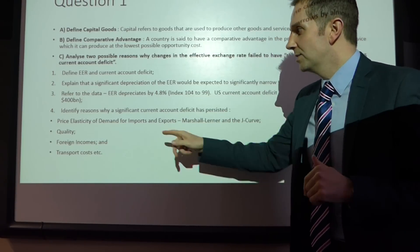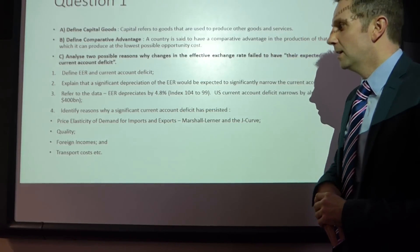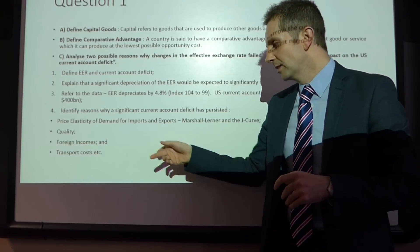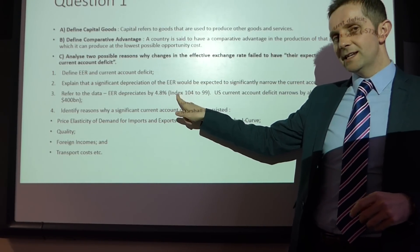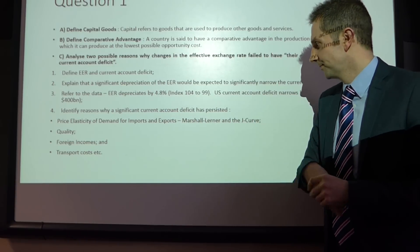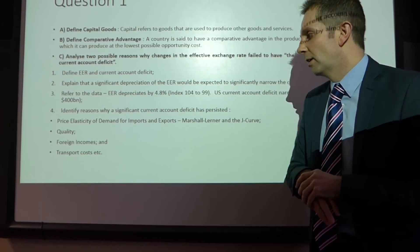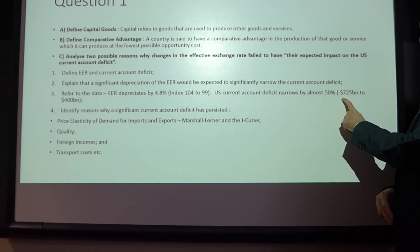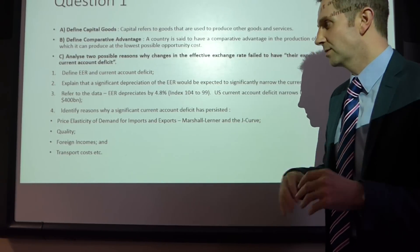Reference the data. The effective exchange rate over the time period shown in the chart depreciates by 4.8%, from an index of 104 to 99. The US current account deficit narrows by almost 50% — from around $725 billion USD to $400 billion, so close to a 50% reduction. Then you're asked to analyse two possible reasons why the exchange rate changes failed to have their expected impact.